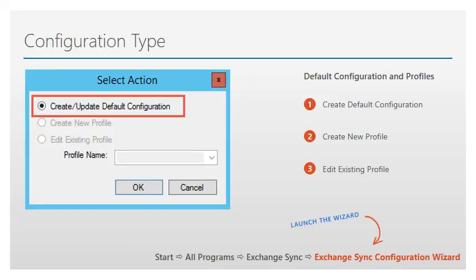In order to start the configuration wizard, we need to navigate to the configuration wizard shortcut located under Start, All Programs, Exchange Sync, Exchange Sync Configuration Wizard. When the configuration wizard starts, a select action window will pop up and ask for the requested action. If this is the first time running the configuration wizard, the only available option will be Create Update Default Configuration. If you have run the wizard before and already created your default configuration, you will have the options to create a new profile or edit your existing profile. Make your selection and click on the OK button to continue.